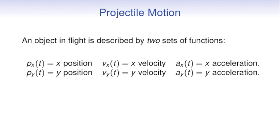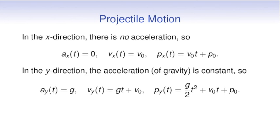An object in flight is described by two sets of functions: position, velocity, and acceleration in the x and y directions. In the x direction, there is no acceleration, so velocity is constant and position is linear. In the y direction, acceleration is constant, so velocity is linear and position is quadratic.